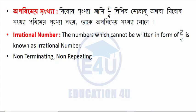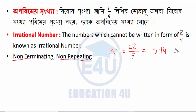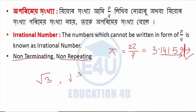A non-terminating, non-repeating decimal number is called an irrational number. The number which cannot be written in the form of P by Q is known as an irrational number. Examples include square root of 3, root of 5, root of 6, root of 7. For instance, root 3 equals 1.732...